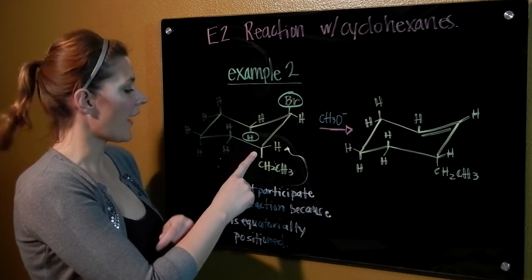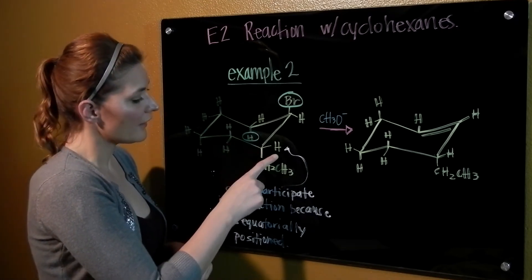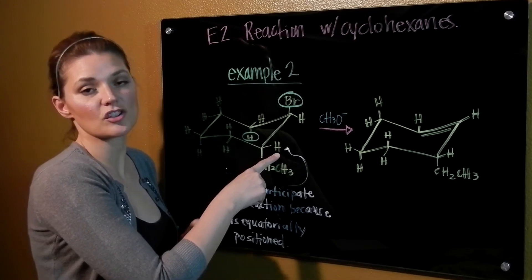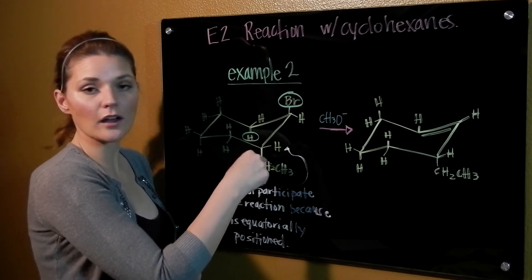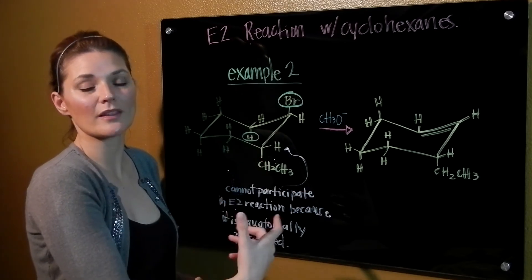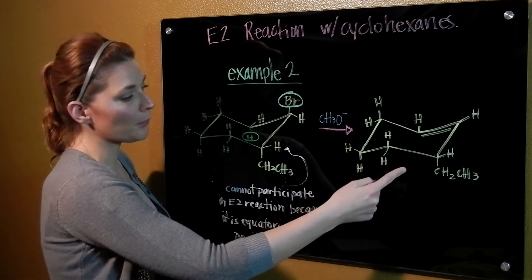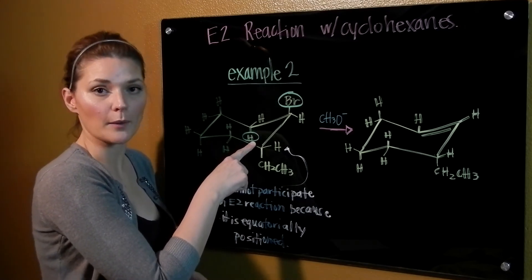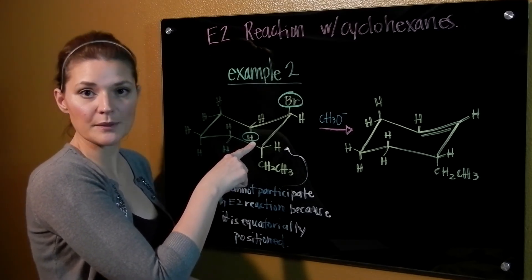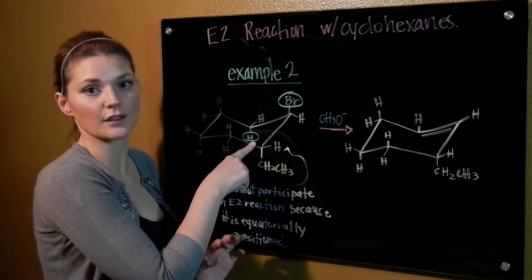The big difference lies in the fact that now on this beta carbon, the hydrogen is not positioned axially. It's positioned equatorially. Which means we cannot use this hydrogen when doing the E2 reaction. That means then that our major product will be based off of the reaction with this hydrogen on this beta carbon. Because this hydrogen is positioned in the necessary axial location.